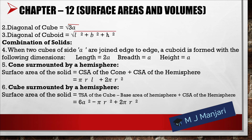Diagonal of a cube = √3·a. Diagonal of a cuboid = √(l²+b²+h²). Next, combination of solids. When two cubes of side a are joined edge to edge, a cuboid is formed with dimensions: length = 2a, breadth = a, and height = a.